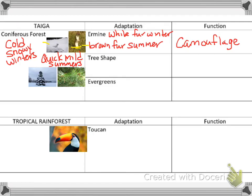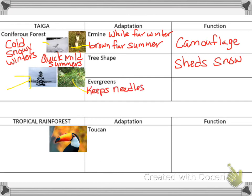In this area, we also have tree shape — think of a Christmas tree shape. The tree is designed that way so it can shed snow and not be weighed down by it, which helps protect itself. And then evergreens keep their needles. Because they're needles and not leaves, they conserve energy and limit water loss — just like cactus spines, there's not much surface area, which helps them survive.